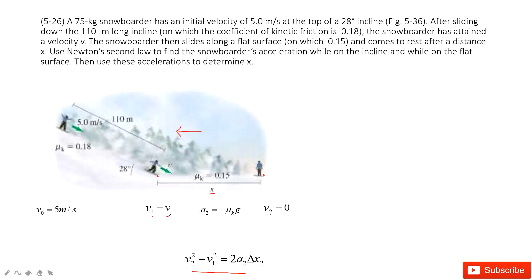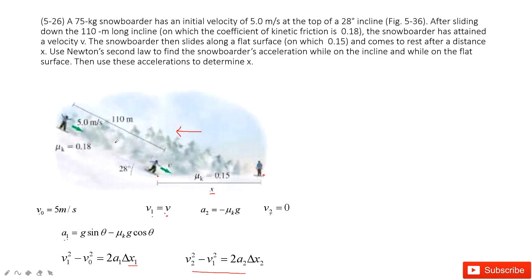But there is another problem: we don't know v1. So we look at the slope. On the slope, the acceleration can be calculated easily. We call it a1, which equals g·sinθ minus friction divided by mass, since mg·sinθ minus friction equals mass times acceleration. After we know the acceleration and the initial velocity, and the displacement along the slope is 110 meters, we can find v1 using v1² - v0² = 2·a1·Δx.